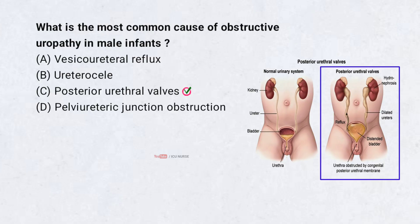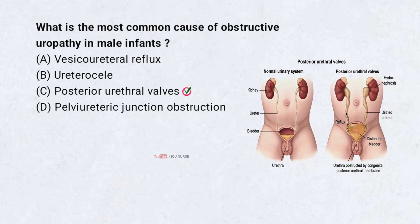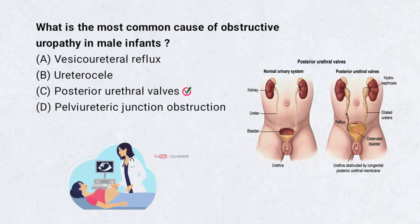Posterior urethral valves are the most common cause of obstructive uropathy in male infants. They are extra flaps of tissue in the urethra that block urine flow. This can lead to a swollen bladder and kidney damage. It is usually diagnosed with prenatal or postnatal ultrasound. Early surgery improves outcomes.